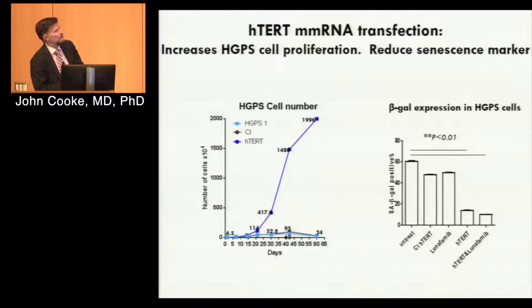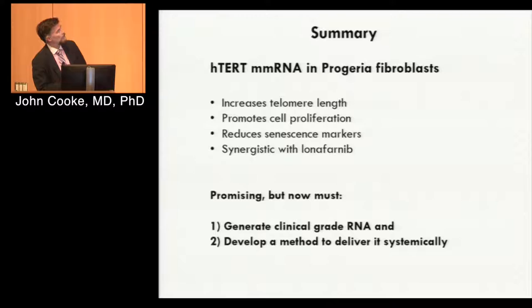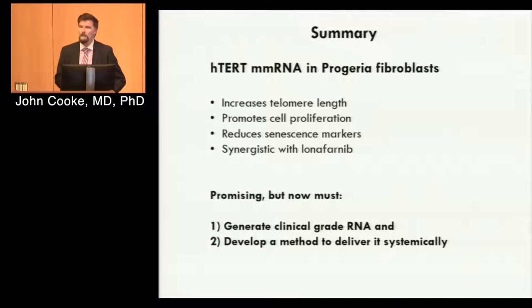CI-H-TERT is catalytically inactive H-TERT — a mutated H-TERT where telomerase activity is destroyed by a site mutation, but otherwise the protein is normal. It's a nice control. H-TERT reduces beta-galactosidase expression, which is a marker of senescence. We also looked at inflammatory cytokines, which were reduced. As a summary: H-TERT mRNA in progeria fibroblasts increases telomere length, promotes cell proliferation, reduces senescence markers, and is synergistic with the only drug approved for these kids — lonafarnib, which is a farnesyltransferase inhibitor.